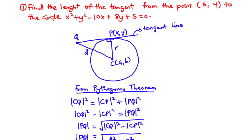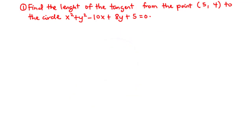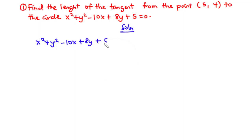Using this approach, we solve Question 1: Find the length of the tangent from the point (5, 4) to the circle x² + y² − 10x + 8y + 5 = 0. To solve this, we need to find the center and radius of the circle, then find the distance D, and apply the tangent length formula.